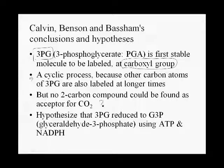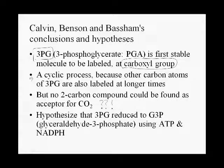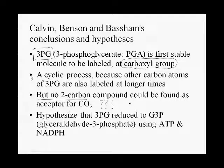But this was the big question. If you're going to get a 3-carbon compound as a result of adding a single molecule of carbon dioxide, then there should be a 2-carbon compound — 2 plus 1 equals 3. But there was no 2-carbon compound. They could not identify any 2-carbon compound that could act as an acceptor to combine with carbon dioxide to form 3-phosphoglycerate.